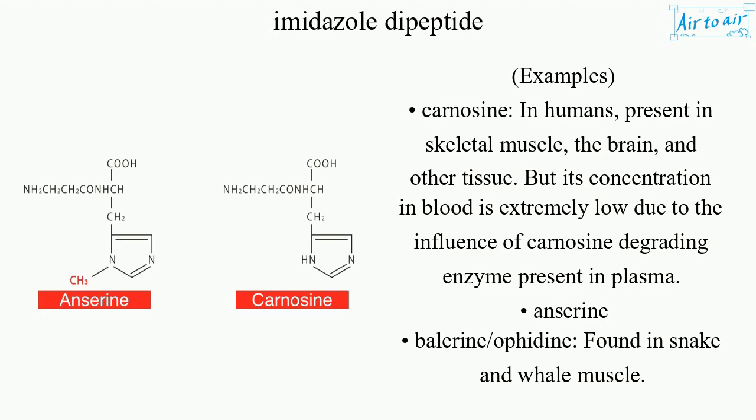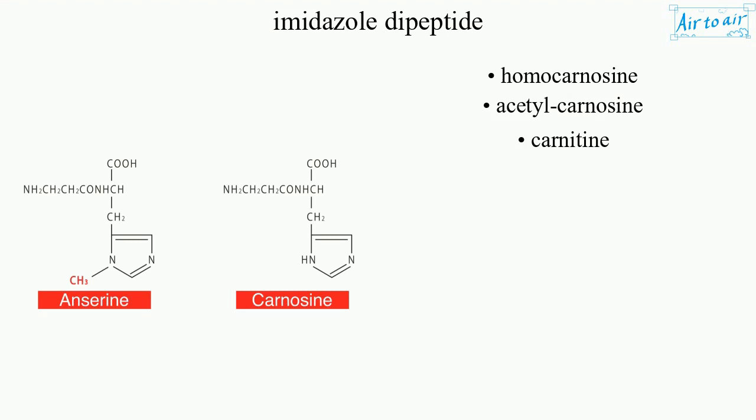found in snake and whale muscle. Related compounds include homocarnosine, acetyl carnosine, and carnitine.